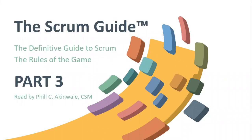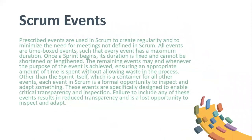Part three: Scrum events. Prescribed events are used in Scrum to create regularity and to minimize the need for meetings not defined in Scrum. All events are time-boxed so that every event has a maximum duration. Once a sprint begins, its duration is fixed and cannot be shortened or lengthened. The remaining events may end whenever the purpose of the event is achieved, ensuring an appropriate amount of time is spent without allowing waste in the process.